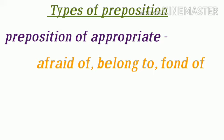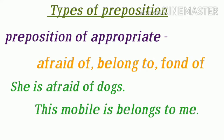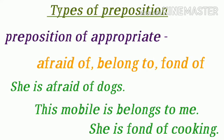Next है preposition of appropriate — इस प्रकार के preposition में कुछ particular preposition का use किया जाता है और इसमें किसी प्रकार का कोई rule नहीं होता। Appropriate का मतलब होता है उचित preposition। जैसे: 'afraid of' — एक adjective plus preposition है — She is afraid of dogs, वह कुत्तों से डरती है। 'Belong to' — This mobile belongs to me, ये mobile मेरा है। 'Fond of' — भी एक adjective plus preposition है — She is fond of cooking, उसे cooking करना पसंद है।